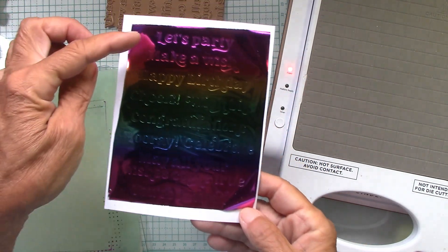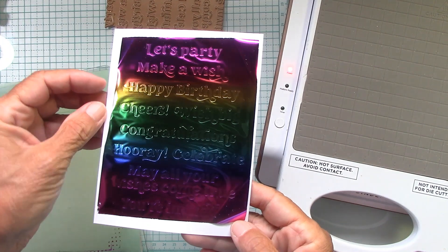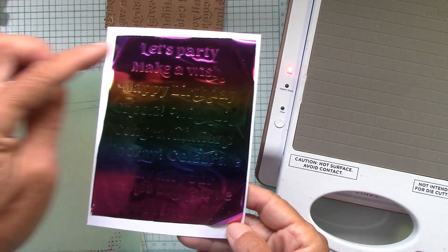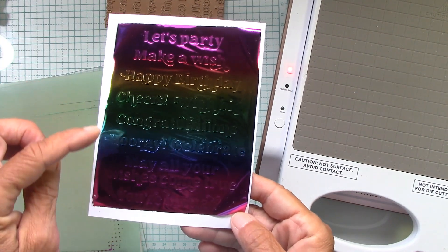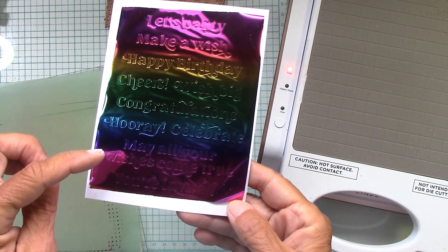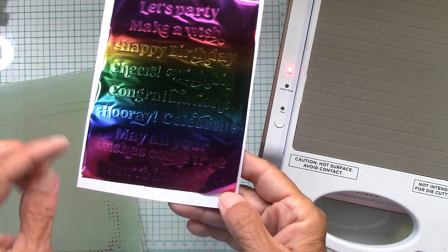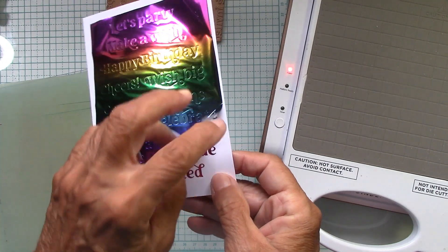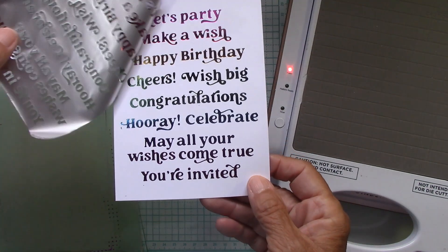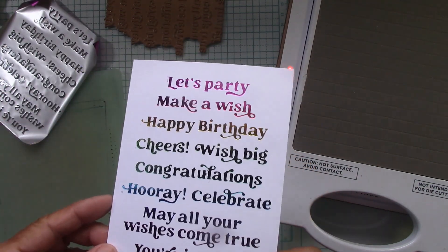Oh you're invited, let's party, make a wish, happy birthday, cheers, wish big, oh that's nice. Congratulations, hooray, celebrate, make all your wishes come true, and you're invited. So let's peel this back. Look at how pretty in the rainbow paper.